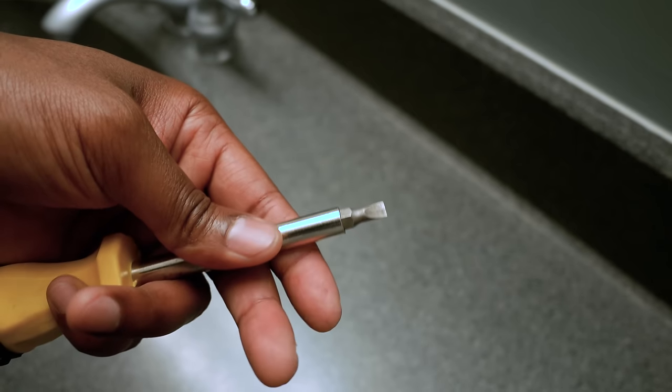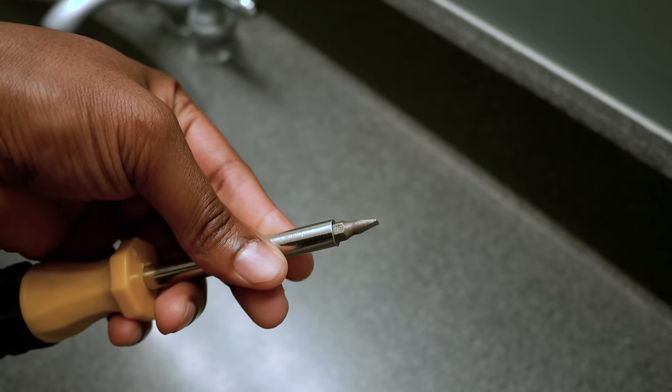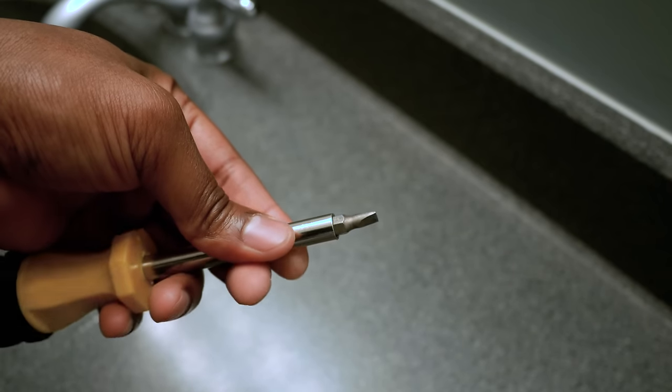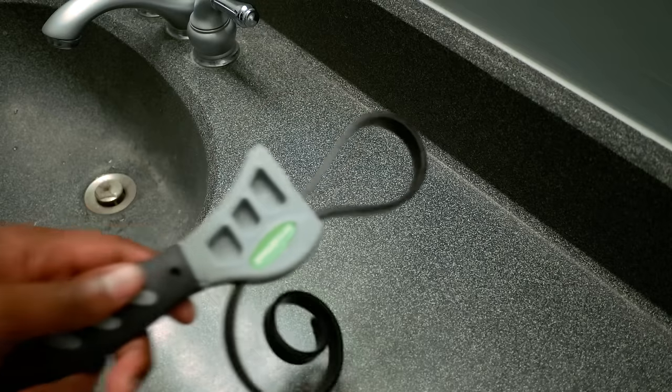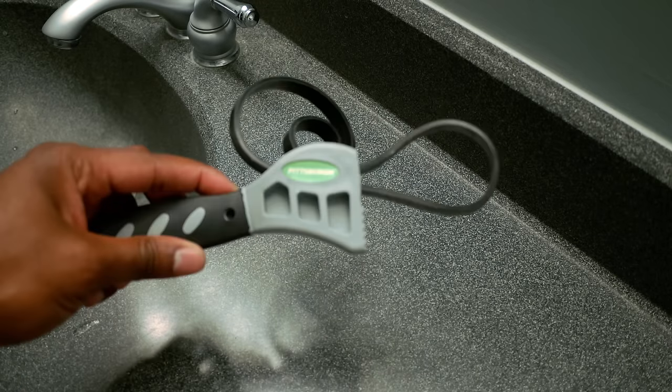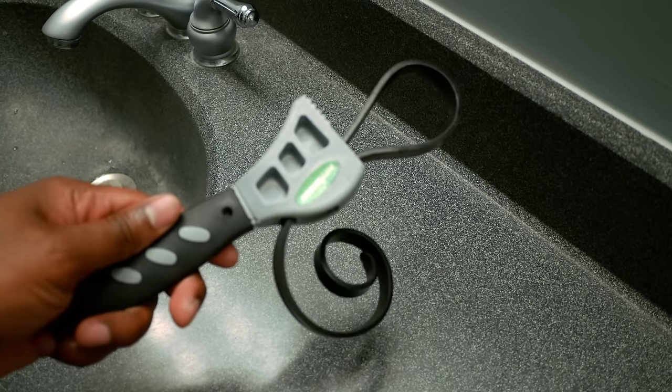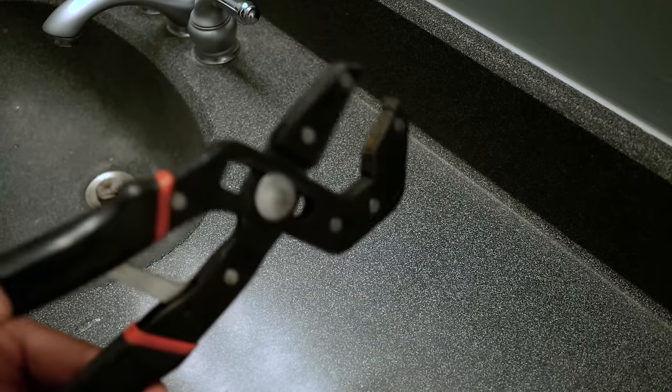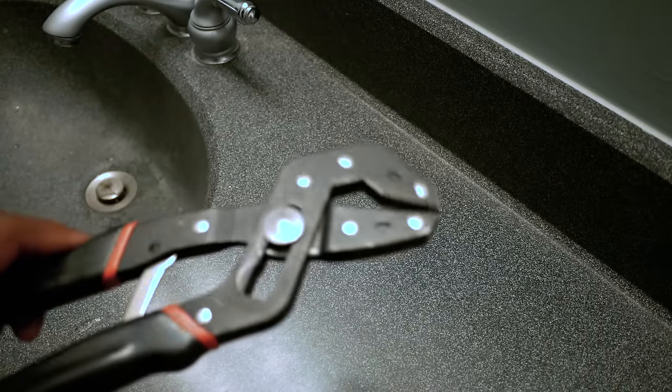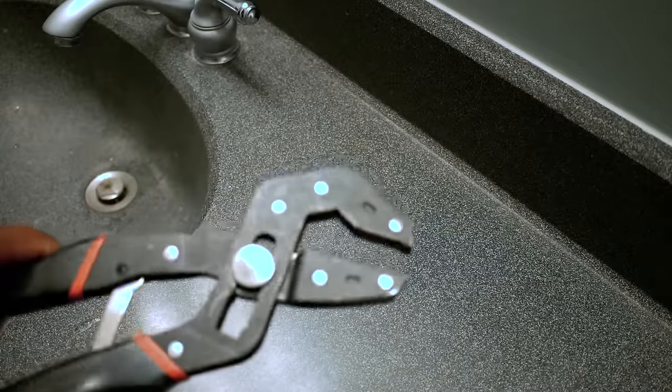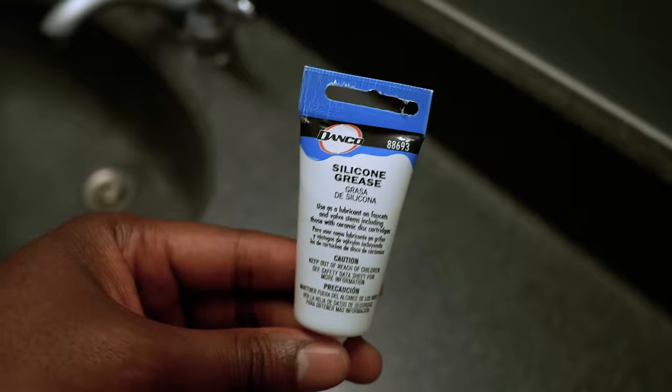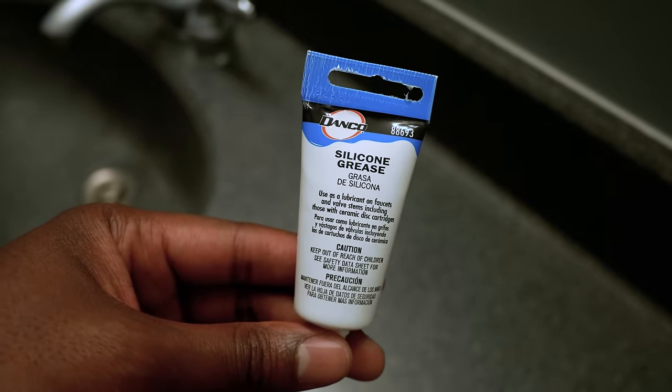Next you're going to need a flathead screwdriver or something similarly flat because you're going to need to wedge it in between two pieces so you can pop out the cartridge. A rubber wrench is optional but it'll be good to have if you want to save yourself some scratches. Next you want a pair of pliers or a wrench. Whatever one works for you. I just have a personal preference for a pair of pliers.